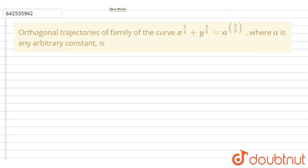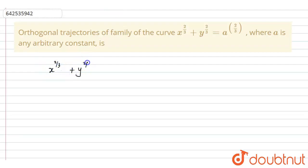Let's move to the answer. First, I'm going to write down the given curve equation. So, x^(2/3) + y^(2/3) = a^(2/3). This is equation 1.